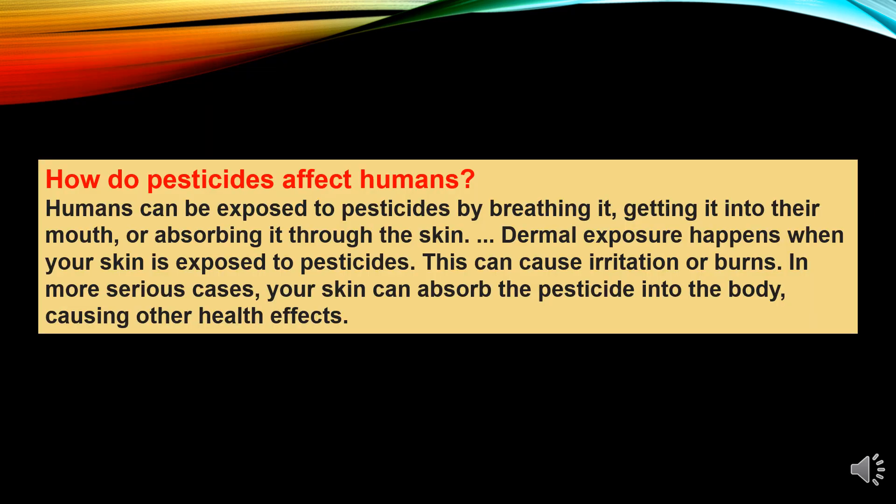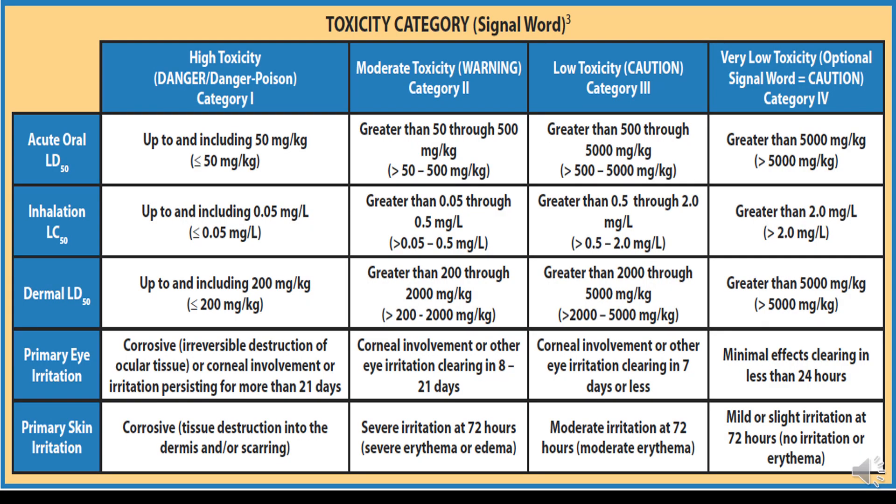How do pesticides affect humans? Humans can be exposed to pesticides by breathing them in, getting them into their mouth, or absorbing them through the skin. Dermal exposure happens when your skin is exposed to pesticides and can cause irritation or burns. In more serious cases, the skin can absorb the pesticide into the body, causing other health effects. The toxicity categories of pesticides — highly toxic, moderate toxicity, low toxicity and very low toxicity — have been classified based on acute oral LD, inhalation LC, dermal LD, primary eye irritation and primary skin irritation, with criteria given for each class.